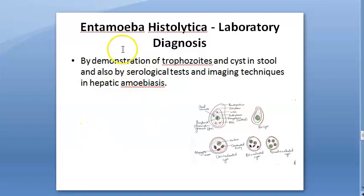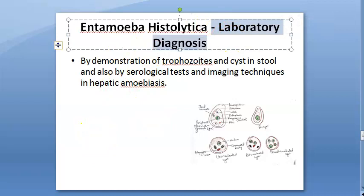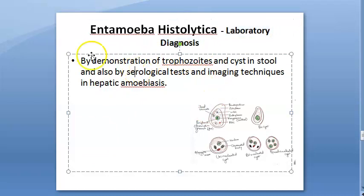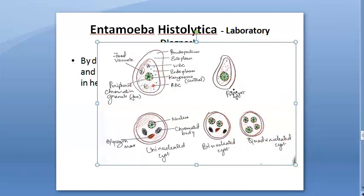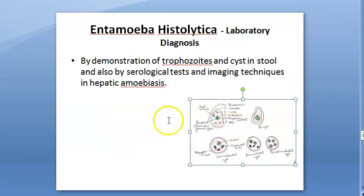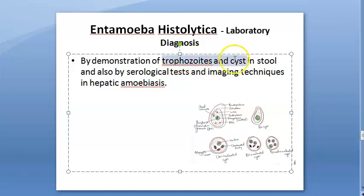In this video we want to look at the lab diagnosis of Entamoeba histolytica. In one line, you can demonstrate the trophozoites and cysts in the stool. The stages include trophozoite, pre-cyst, uninucleate, binucleate, and quadrinucleate mature cyst which is the infective form. If there is a trophozoite, it indicates active infection; if there is only a quadrinucleate cyst, it can be a carrier.